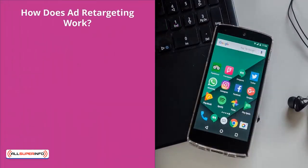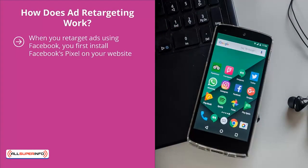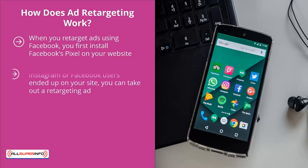How does ad retargeting work? When you retarget ads using Facebook, you first install Facebook's Pixel on your website. You then go about promoting on Facebook and Instagram. When people find themselves on your site after clicking on a profile link, the Pixel keeps track of where they landed. Now that the system knows which Instagram or Facebook users ended up on your site, you can take out a retargeting ad.